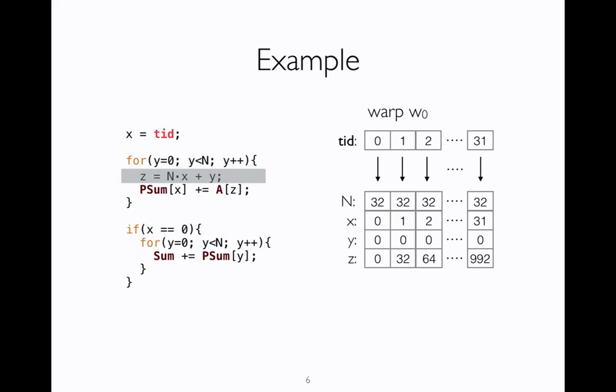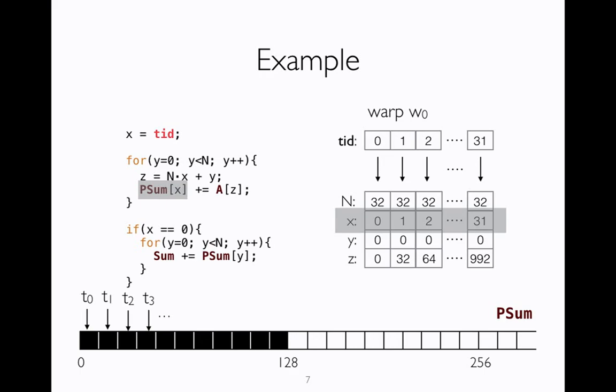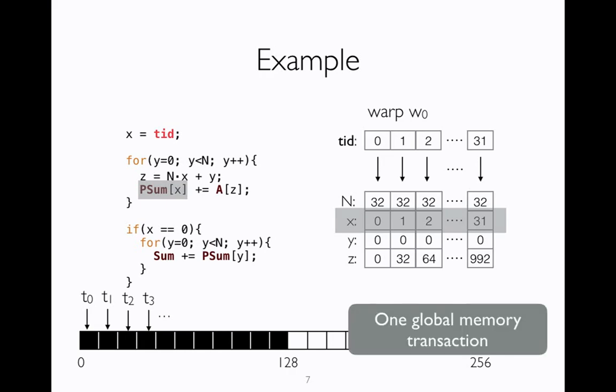The first iteration of the y loop is executed and y gets value 0, and then z is computed. In the next instruction, two global variable array accesses are happening: one is to PSUM and another to the global array A. Let's first look at how the access to PSUM executes. Because PSUM is indexed by x and x takes values from 0 to 31, each consecutive thread accesses consecutive elements. As I described earlier, global memory allows high bandwidth access, so all these elements can be fetched in a single transaction.